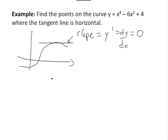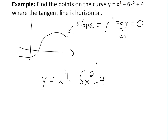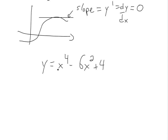The derivative — let's write down the function first: x to the 4 minus 6x squared plus 4. Using basic power rules, y prime equals 4x cubed — you bring the 4 down and subtract 1 from the exponent — then minus 12x, because 2 times 6 is 12 and 2 minus 1 is 1. The derivative of a constant is just 0, so y prime equals 4x cubed minus 12x.